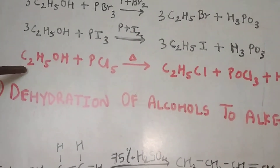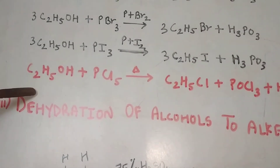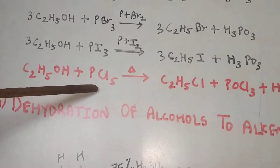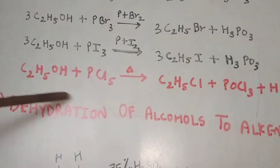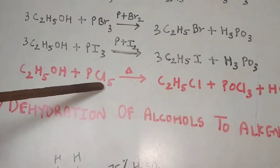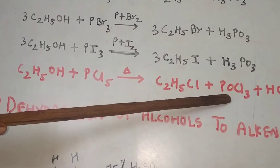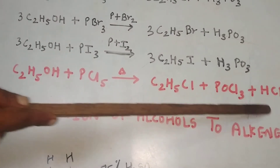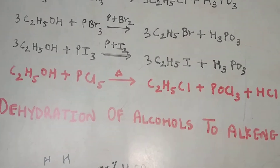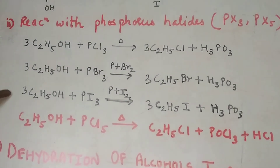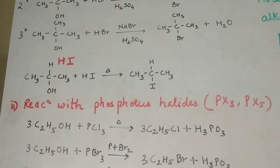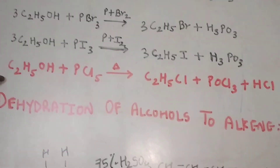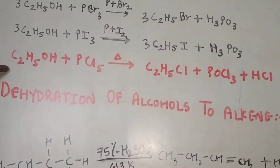The reaction with PCl5: ethyl alcohol when treated with phosphorus pentachloride gives formation of C2H5Cl (ethyl chloride), POCl3 (phosphorus oxychloride), and HCl. All the reactions of PX3 and PX5 type are in your notes of halogen derivatives and we have done them in video form as well.